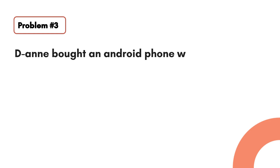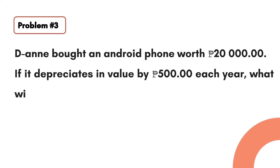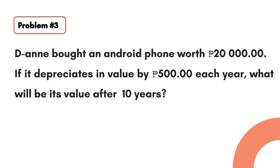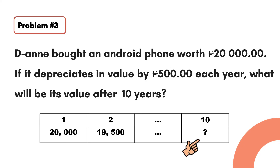Let us solve the last problem. DN bought an Android phone worth 20,000 pesos. If it depreciates by 500 pesos each year, what will be its value after 10 years? On its first year the value is 20,000 pesos; in the second year it becomes 19,500 due to depreciation. What will be the value of DN's Android phone on the 10th year?